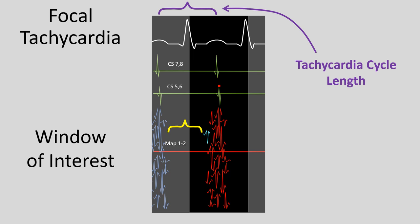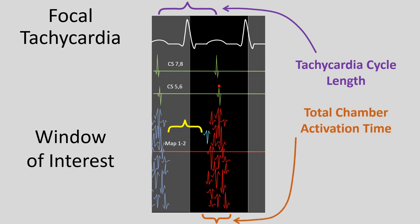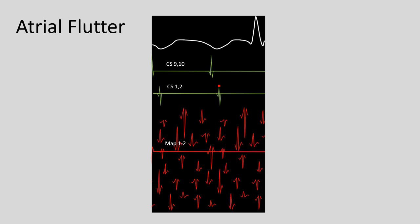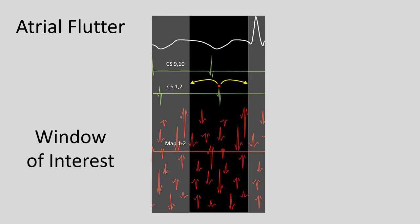One way to think about it: the tachycardia cycle length is much longer than the total time it takes to activate the chamber, creating really easy windowing. In contrast, in atrial flutter there's no electrical diastole. The surface ECG reflects the fact that there's always electrical activity happening — no isoelectric line between P waves. When you pick a reference spot, CS1-2, and start mapping the chamber, there's always going to be electrical activity happening somewhere because this is an ongoing circuit. It will be very important how we pick our window of interest, because what we include and exclude now depends entirely on where we make that window. A symmetrical window around your reference electrogram directly dictates which electrograms are included and which are excluded.